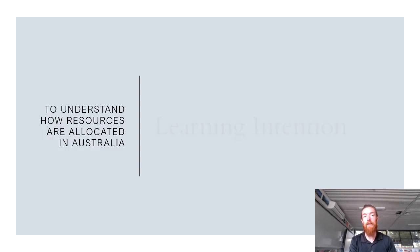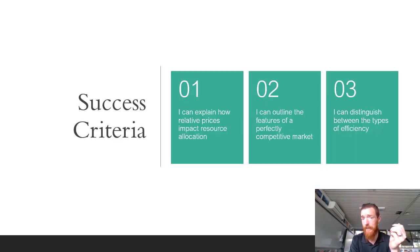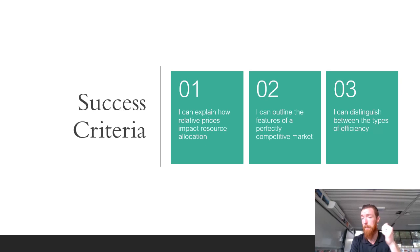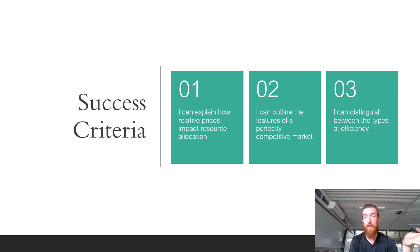Our learning intention for this unit is to understand how resources are allocated in Australia. Our success criteria today is that you can explain how relative prices impact resource allocation for both businesses and consumers, outline the features of a perfectly competitive market, and distinguish between different types of efficiency and potentially relate them to the PPF model.